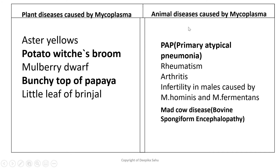Animal diseases caused by mycoplasma include primary atypical pneumonia — called 'atypical' because it differs from normal pneumonia and is usually more serious. Rheumatism and arthritis are also caused by mycoplasma. Mycoplasma hominis and Mycoplasma fermentans cause infertility in human males. Mad cow disease, also known as bovine spongiform encephalopathy, is also caused by mycoplasma — affected animals behave erratically, which is why it is called mad cow disease.